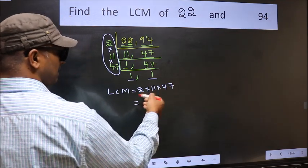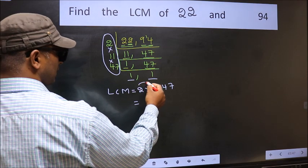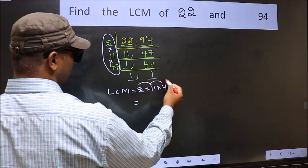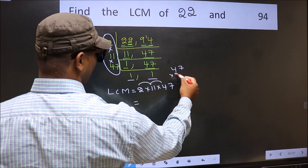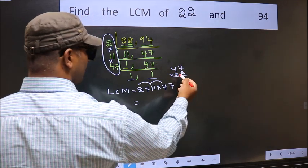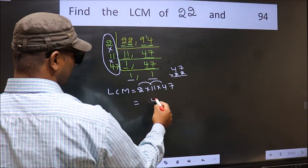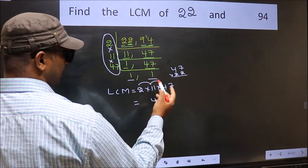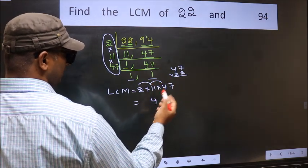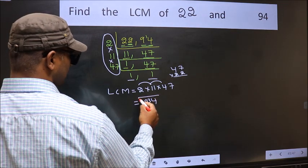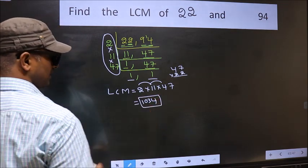So let us multiply these numbers: 2 times 11 is 22, times 47. 22 times 7 is 154. 22 times 4 is 88, plus 15 is 103. So 1034 is our LCM.